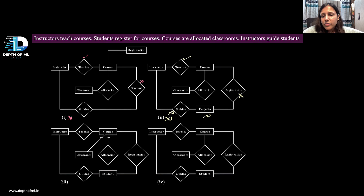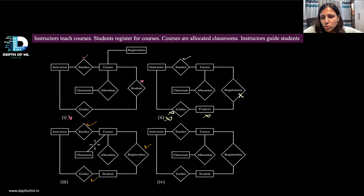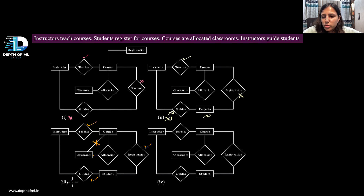In the third option, instructor teaches course — fine. Student registers for course — fine. Instructor guides students — fine. But the classroom-course relationship: the allocation relationship between classroom and course is missing or incorrectly placed. So this is also incorrect.